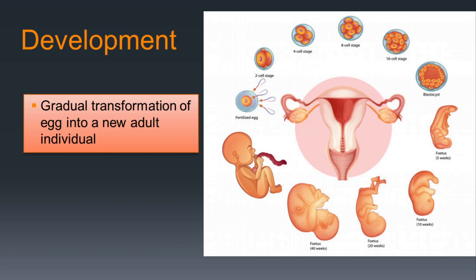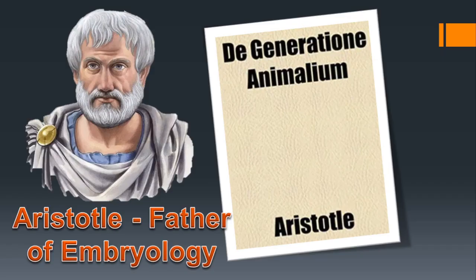The gradual transformation of an egg to a new adult individual is called development. When a single-celled zygote starts cleavage, it gives rise to different tissues, organs and organ systems, and finally the complete adult organism is formed. This gradual transformation of the egg into the new adult individual is called development.